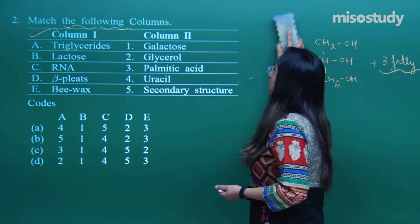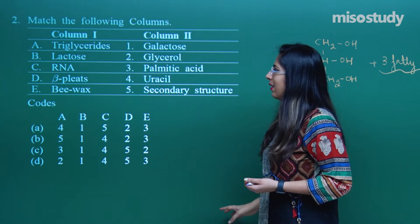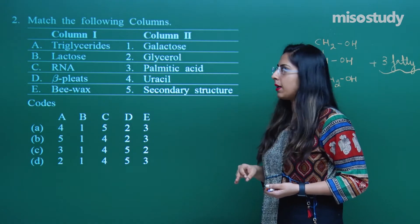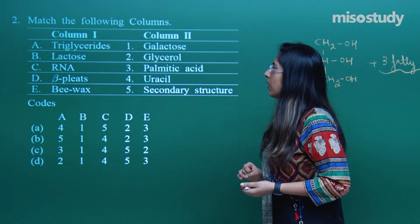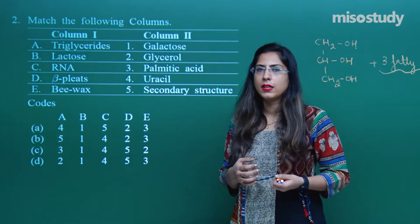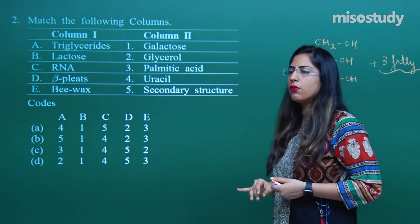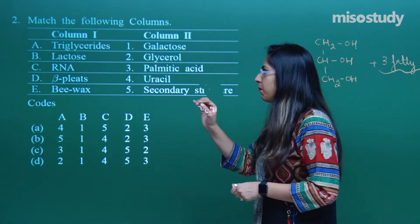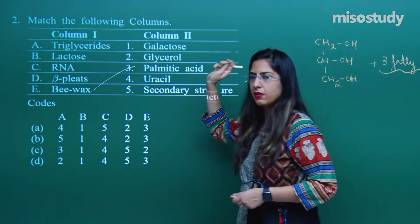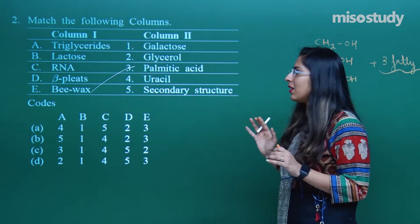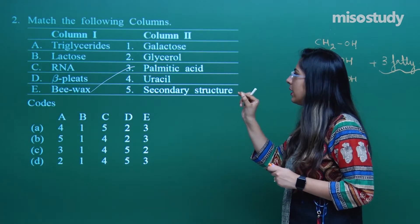Now question number 2. We have to match column 1 and column 2. Column 1 has: triglycerides, lactose, RNA, beta-pleated, and B-VAX. Let us start from the last option. B-VAX: I told you that B-VAX is made up of palmitic acid. This is the correct option, so for E the correct option is 3. Triglycerides — I already discussed glycerol and fatty acid.